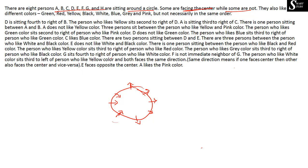They also like different colors — green, red, yellow, black, white, blue, gray and pink — but not necessarily in the same order. We need to find out which of the eight persons likes which color, where each person sits in the arrangement, and whether each person faces inward or outward.